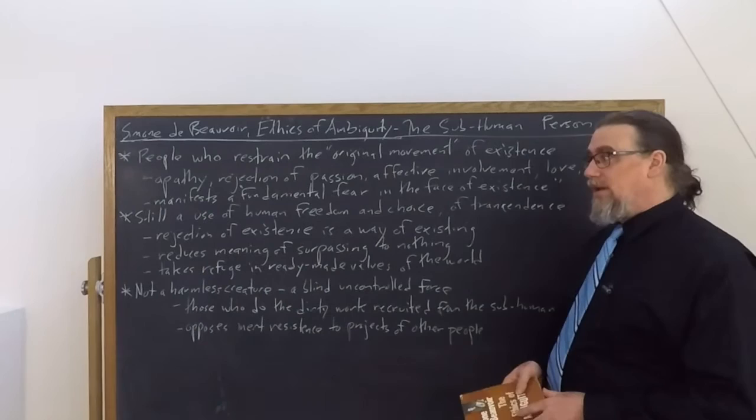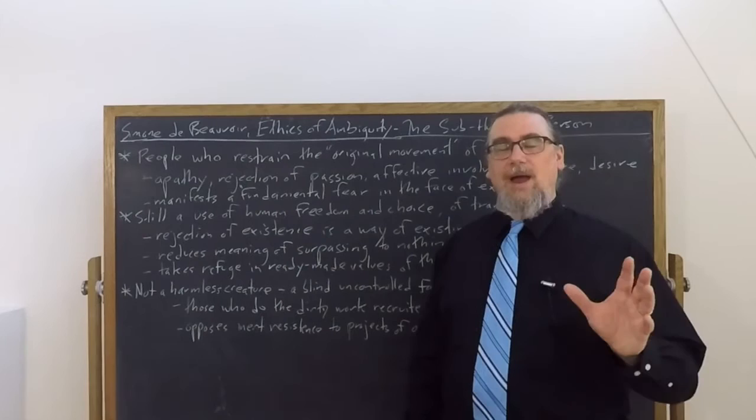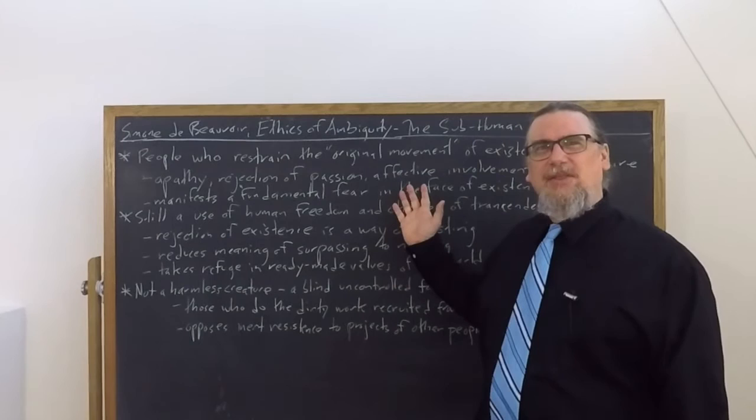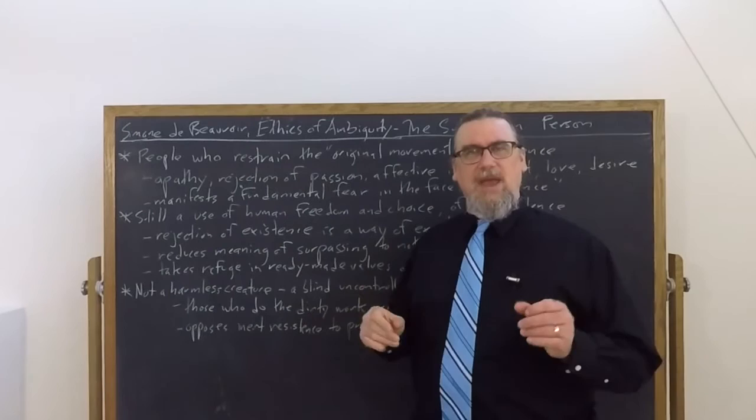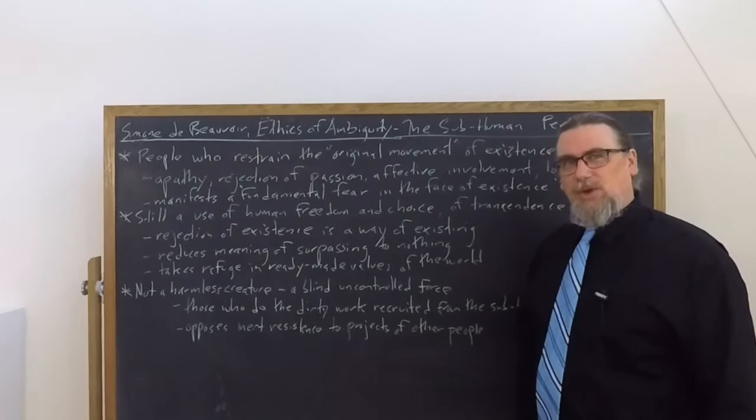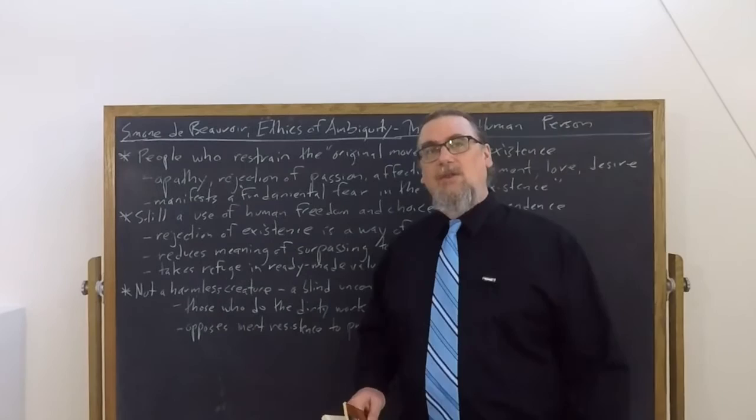And this is where we get to another really interesting point. She calls the sub-person not a harmless creature. Why? Because they can be drawn into just about anything. And you might say, well, that's kind of weird. I mean, you just said they don't care about anything. They're not involved with the world. Well, the access to values through the ready-made values allows them to be easily brought under any sort of cause. It could be a good cause. It could be a bad cause. If it's a good cause, they're not really going to be endorsing it as a good cause. And if it's a bad cause, they are the ones who can be the bad cause enactors.